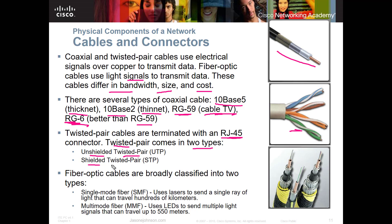Twisted pair comes in two types: unshielded twisted pair (UTP) and shielded twisted pair (STP). Unshielded is cheaper, but if you're running Ethernet cable next to fluorescent lights, you need shielding to prevent electromagnetic interference. Shielded twisted pair has some metallic material inside the plastic sheathing to protect from interference, but it does cost more.